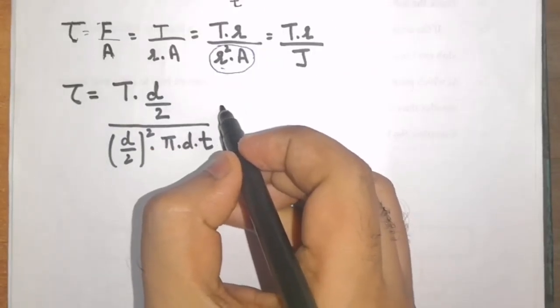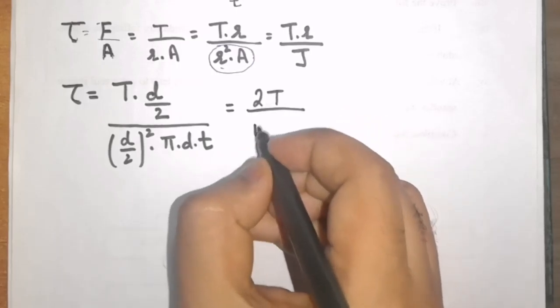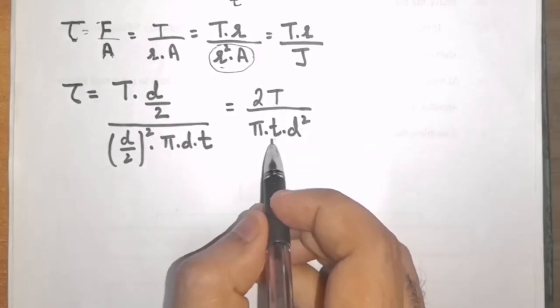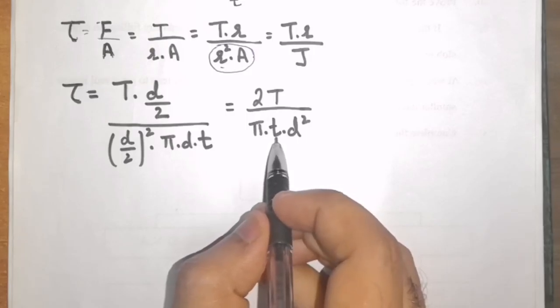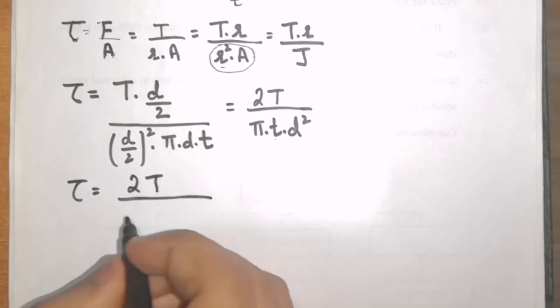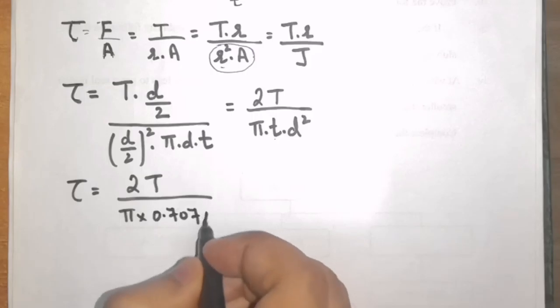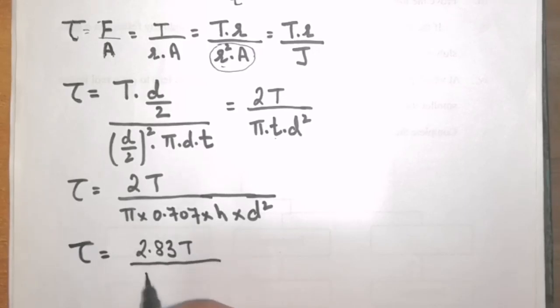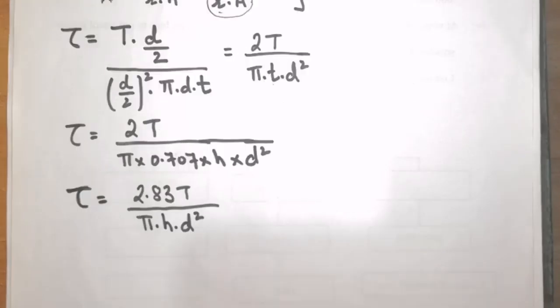On simplifying this equation, I will get 2T divided by pi into T into D square. This T is throat of the weld. If I need to convert this into the size of the weld that is H, I need to write T is equal to 0.707 into H. Tau is equal to 2T divided by pi T will be written as 0.707 into H multiplied by D square. On simplifying this equation further, I will get Tau is equal to 2.83 T divided by pi into H into D square. I got the expression as the shear stress induced in a circular fillet weld for a shaft subjected to pure torsion as 2.83 T divided by pi H into D square.